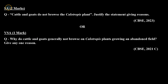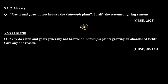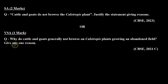The first type is a short answer type question of two marks, asked in CBSE board 2023: 'Cattle and goats do not browse the Calotropis plant — justify the statement giving reasons.' A very short answer type question of one mark was asked in CBSE board 2021: 'Why do cattle and goats generally not browse on Calotropis plants growing in an abundant field? Give any one reason.'